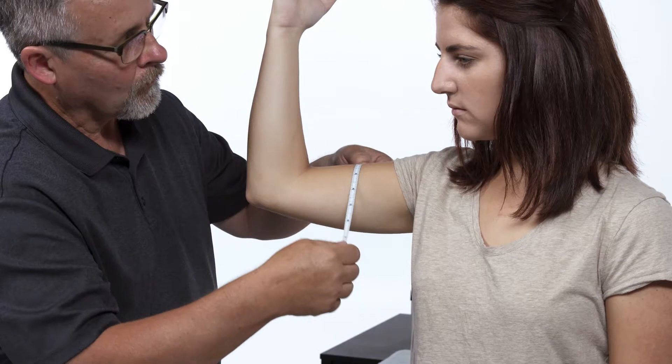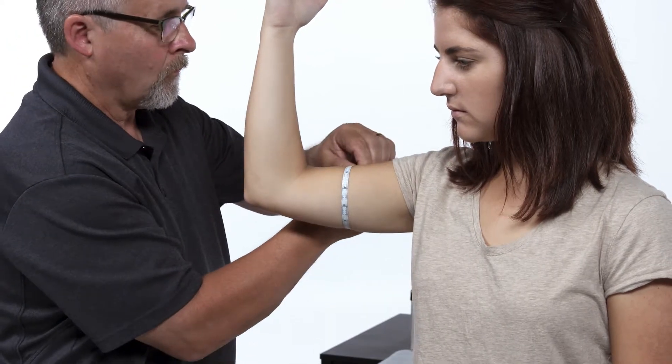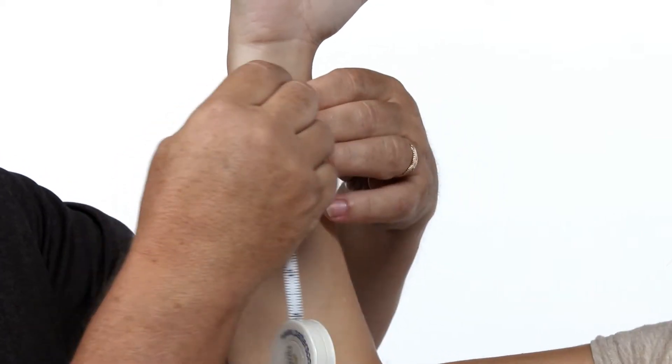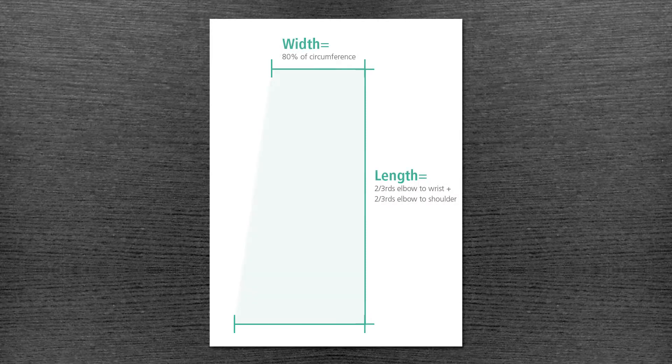The width of the splint material is measured by 80% of the circumference of the mid arm and 80% of the circumference of the distal border. The pattern typically has a trapezoid shape.